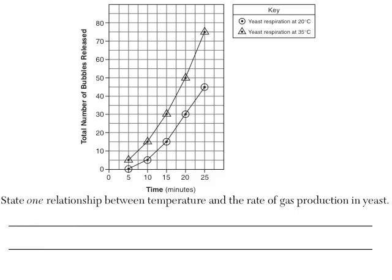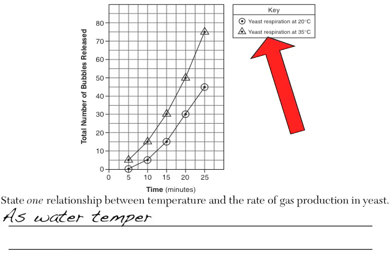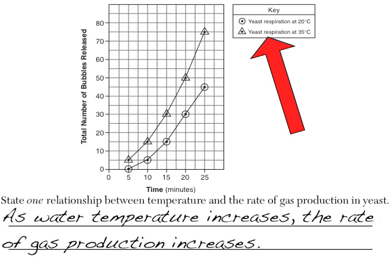So where's temperature on the graph? Well, if you notice in the upper right, there is a thing that says the lines are two different temperatures. So you would say as water temperature increases, the rate of gas production increases. So be careful. Sometimes the lines are labeled, not the bottom of the graph.